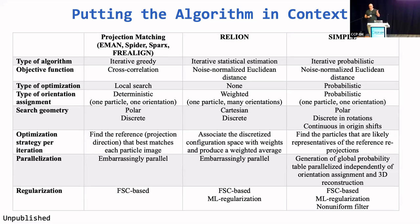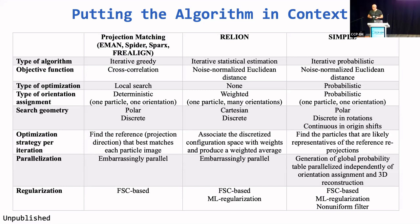The type of optimization in projection matching is local search — local because for each particle image, we make a decision independent of any other particle image, so there's no communication between particles. In RELION, there is technically no optimization — it's a matter of associating the configuration space with weights and controlling the averaging. Whereas optimization in SIMPLE is probabilistic.